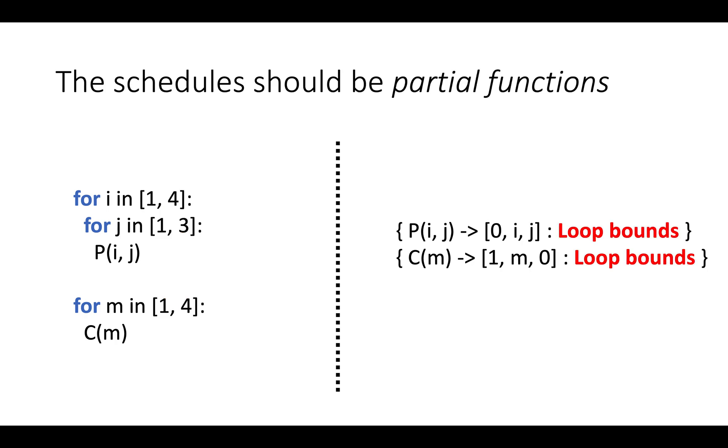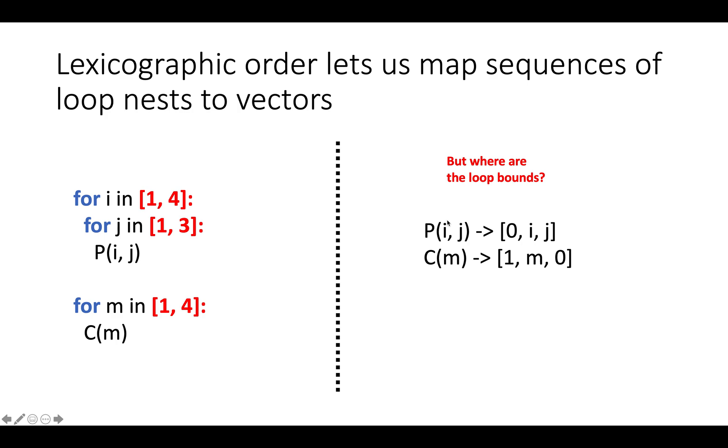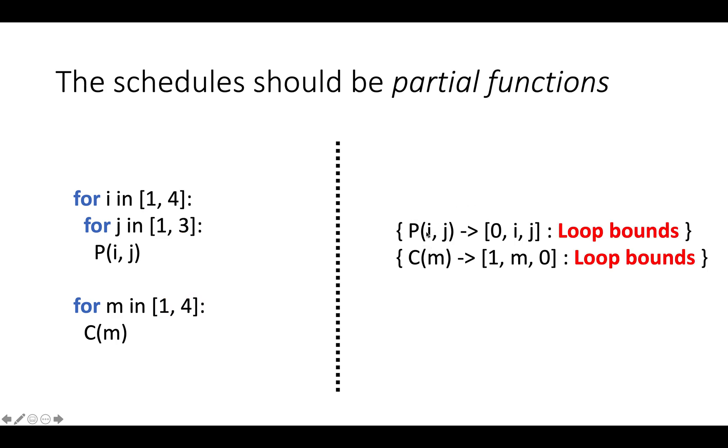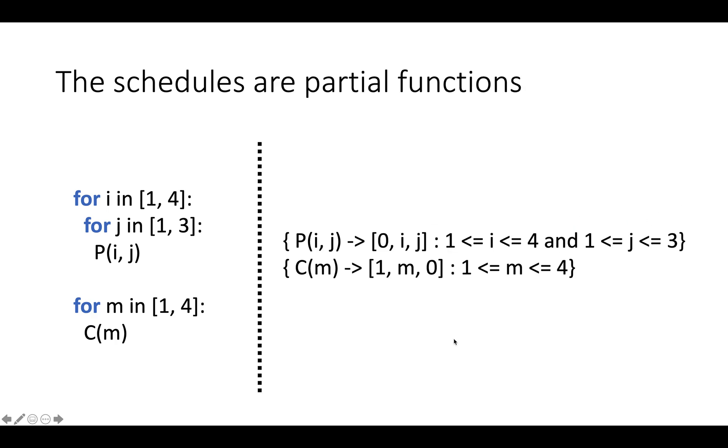So the first point is that the schedules actually need to be partial functions. To refine our notation, we can say that P(i,j) goes to [0, i, j] for some set of values that represent the loop bounds, or some restriction of this set that represents the loop bounds, and similarly for C(m). The way we actually do this is we say that P(i,j) goes to [0, i, j] for all i between 1 and 4 and j between 1 and 3, and that C(m) goes to [1, m, 0] for all m between 1 and 4.